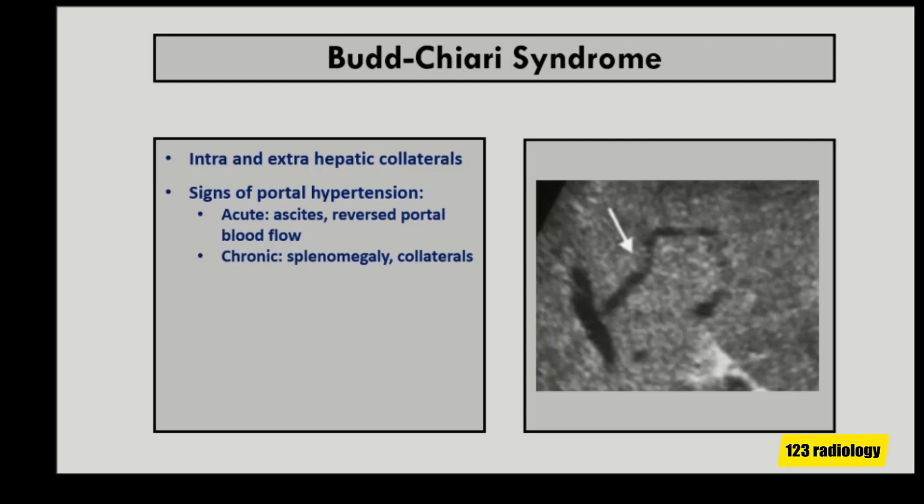In the acute stage, there is ascites and reverse portal blood flow. However, in the chronic stage of the disease, splenomegaly is a common finding, with reverse portal blood flow.